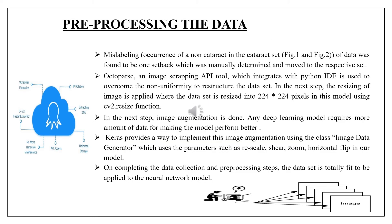Mislabeling — occurrence of a non-cataract image in the cataract dataset — was found to be one setback, which was manually identified and moved to the respective set. Octopus, an image scraping API tool that integrates with Python IDE, was used to overcome data non-uniformity and restructure the data. Keras provided a way to implement image augmentation using the ImageDataGenerator class, which uses parameters such as rescale, shear, zoom, and horizontal flip.